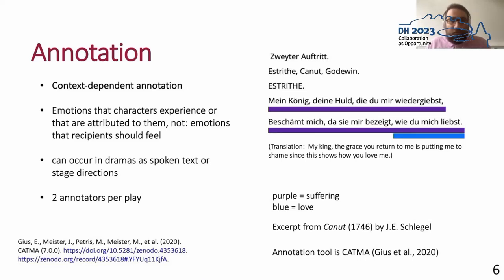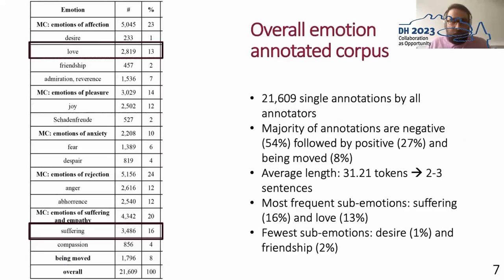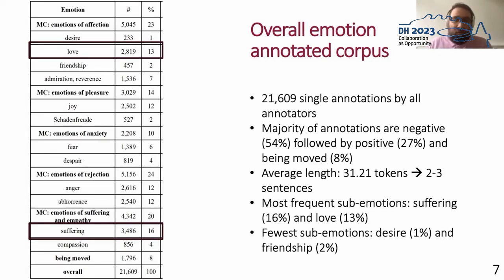One play was annotated by two student assistants independently from each other according to the guidelines. Looking at the final corpus, we gathered around 21,000 single emotion annotations of varied length — overall, one emotion annotation was about two to three sentences. Looking at emotion distributions, we identified that around 54% of all annotations are negative, and the most frequent sub-emotions are suffering and love. However, we also identified some sub-emotions that proved to be rarely annotated, like desire, friendship, and schadenfreude.